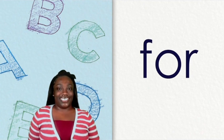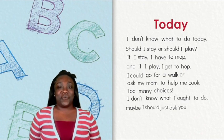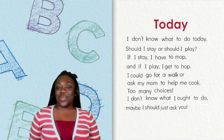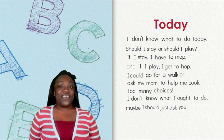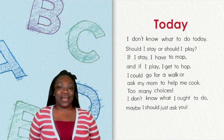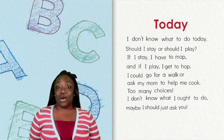As I read our poem one last time, pay close attention to our high-frequency words OR and FOR. I don't know what to do today. Should I stay or should I play? If I stay, I have to mop. And if I play, I get to hop. I could go for a walk, or ask my mom to help me cook. Too many choices. I don't know what I ought to do. Maybe I should just ask you.